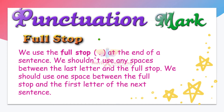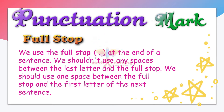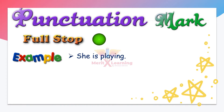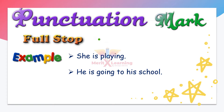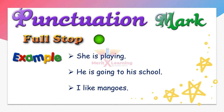Full stop. We use the full stop at the end of a sentence. We shouldn't use any spaces between the last letter and the full stop. We should use only one space between the full stop and the first letter of the next sentence. For example: 'She is playing.' Full stop at the end. 'He is going to his school.' Full stop at the end. 'I like mangoes.' Full stop at the end.